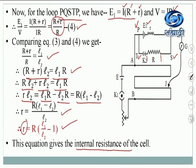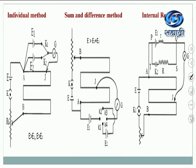Small r is the internal resistance. Capital R is the resistance taken out from the resistance box, so it is known to us. L1 and L2 are the two lengths that we have measured. So we can determine the internal resistance of the cell by using this potentiometer.